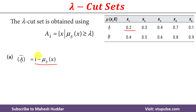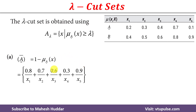The membership value of x1 in the inverse of fuzzy set A is 1 minus 0.2, which equals 0.8. Similarly for x2, the membership value in fuzzy set A is 0.3, so its inverse membership value is 1 minus 0.3, which equals 0.7. Similarly we calculate the membership values for x3, x4, and x5 in the inverse of fuzzy set A.